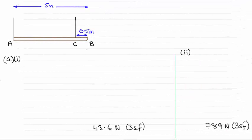Hi there. Now for this question, we had to find the tensions in the two strings at A and at C. As you can see, the tension at A was 43.6 newtons and the tension at C was 789 newtons, both given to three significant figures.